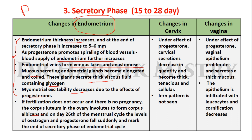If fertilization does not occur, the corpus luteum in the ovary involutes to form the corpus albicans. From day 26 of the menstrual cycle, the levels of estrogen and progesterone fall suddenly, bringing the secretory phase of the endometrial cycle to an end. Changes in the cervix during the secretory phase: under the effect of progesterone, cervical secretions decrease in quantity and become thick, tenacious, and cellular.